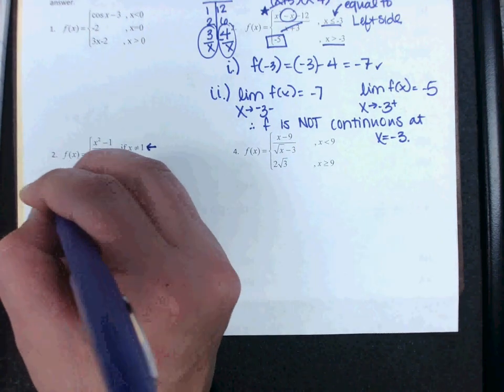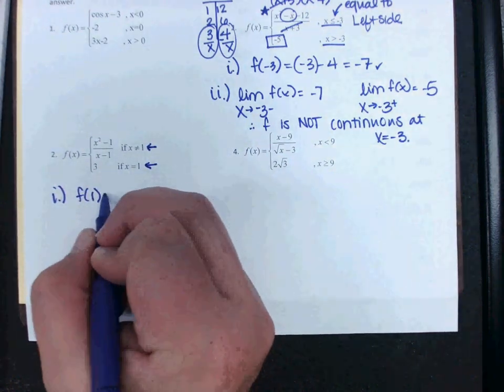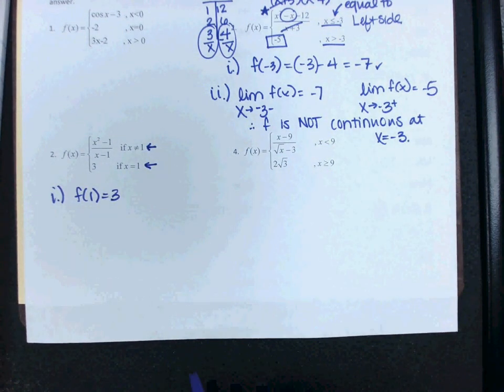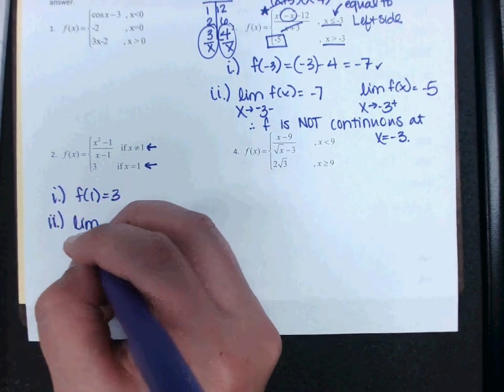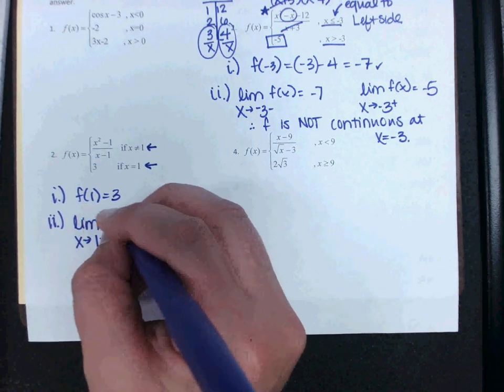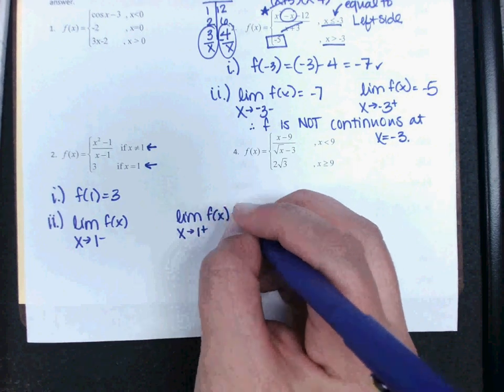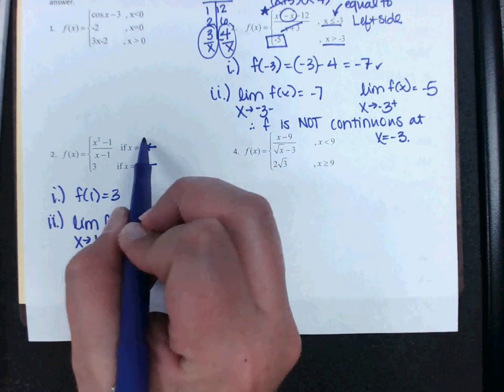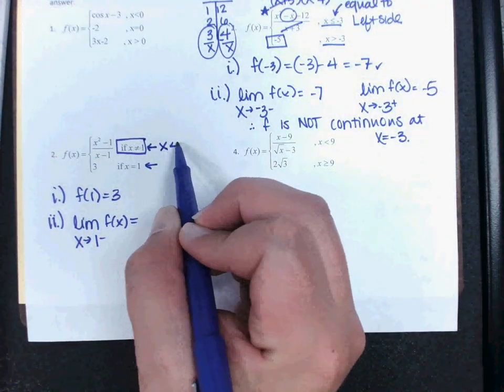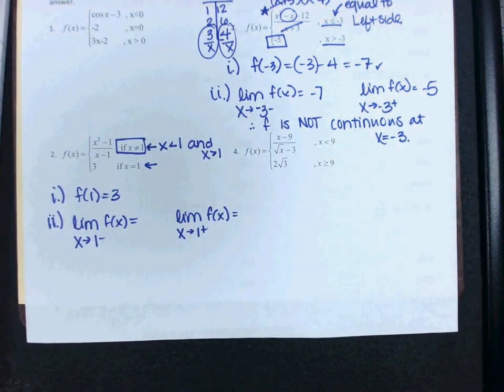This is when x is 1. This is when x is not 1. So when I do my first step here, I'm plugging into the bottom. f of 1 would just be 3. Remember, that's my value at 1. But then in step 2, when I do my limit as x approaches 1 from the left and the limit as x approaches 1 from the right, I'm actually going to be plugging into the top both times. Because remember, if x is not equal to 1, that includes x less than 1 and x greater than 1. Because it's all the numbers other than 1, so to the left of 1 and to the right of 1.